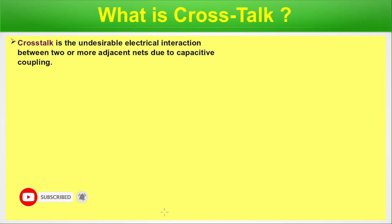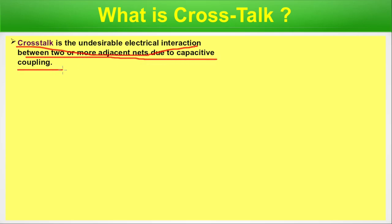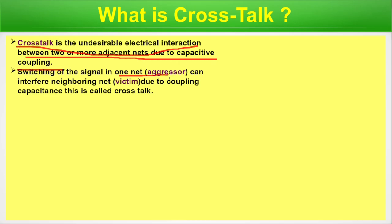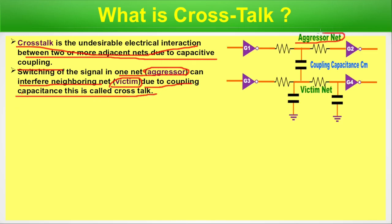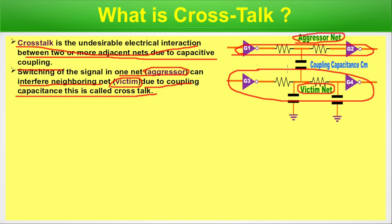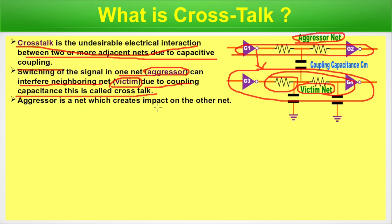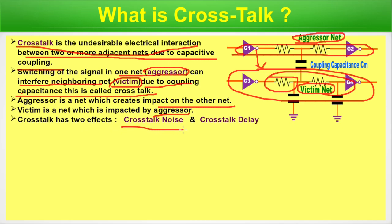What is crosstalk? Crosstalk is an undesirable electrical interaction between two or more adjacent nets due to capacitive coupling. Switching of a signal in one net — called the aggressor net — can interfere with a neighbouring net — called the victim net — due to coupling capacitance. This is called crosstalk. The aggressor is a net which creates impact on the other net; the victim is a net which is impacted by the aggressor. Crosstalk has two effects: crosstalk noise and crosstalk delay.